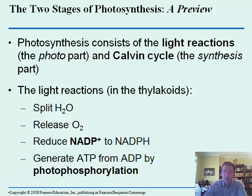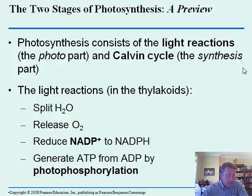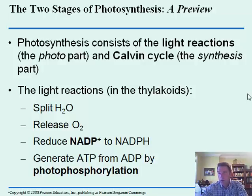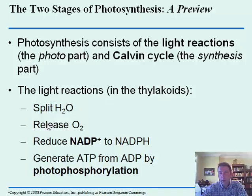The light reactions are sometimes called the light-dependent reactions — that's the 'photo' part. The synthesis part — the combining of simple elements to form larger molecules — is called the Calvin cycle. In the first part, these reactions take place in the thylakoids. It splits water, releases oxygen, reduces NADP — which is one of the electron carriers, meaning it picks up an electron and a hydrogen — and it generates ATP through phosphorylation.